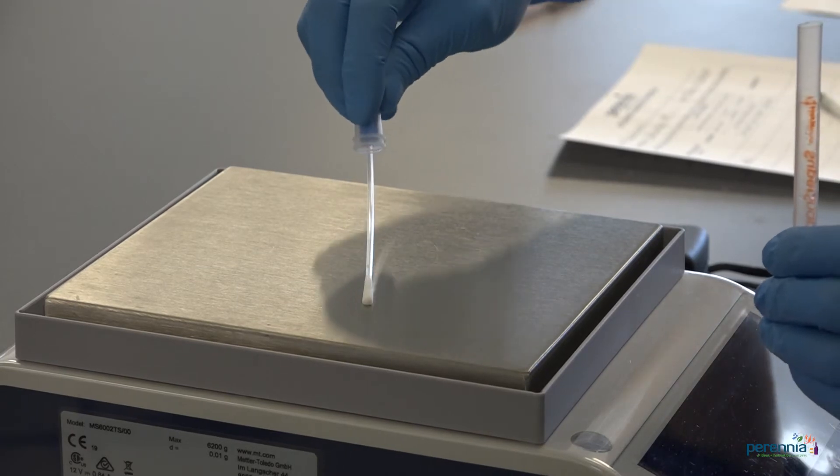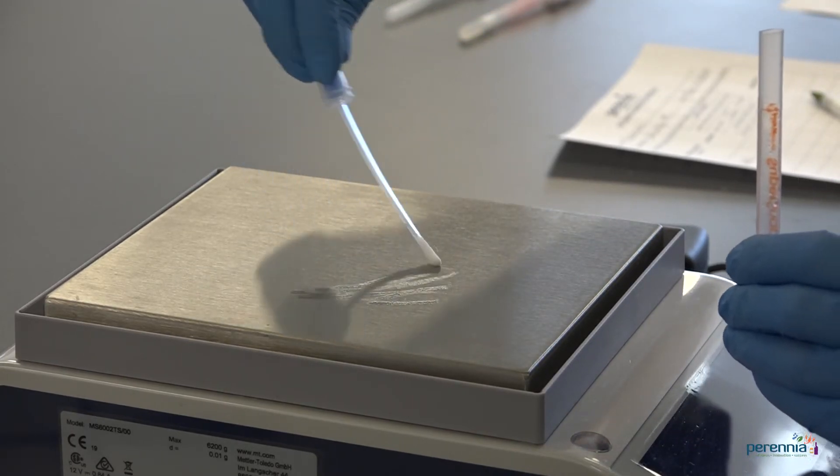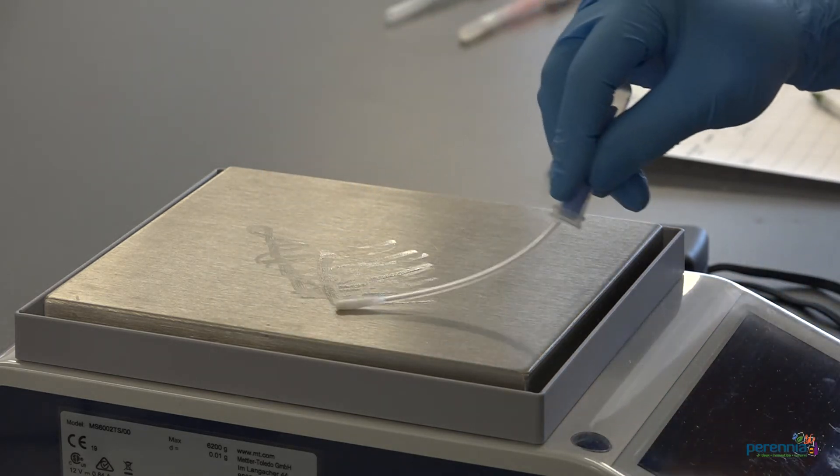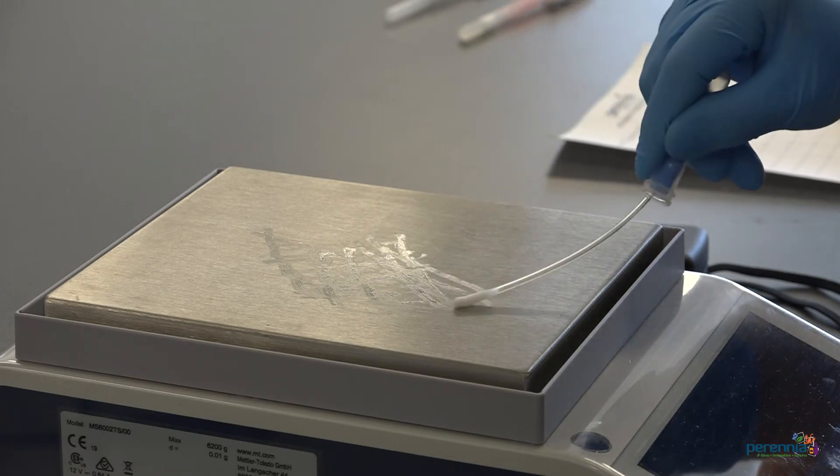Step number four, swab a four by four inch area using a crisscross pattern ensuring even coverage. Using even pressure, rotate the shaft of the swab. Be careful to not touch the shaft of the swab.